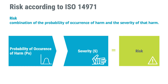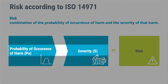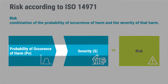Risk is defined as the combination of probability of occurrence of harm and the severity of that harm. This means that something highly unlikely to happen but with severe consequences could get the same risk level as a risk that is likely to happen but with very low severity. Probability of occurrence of harm is often abbreviated with just PO, and severity is often abbreviated with a single S.